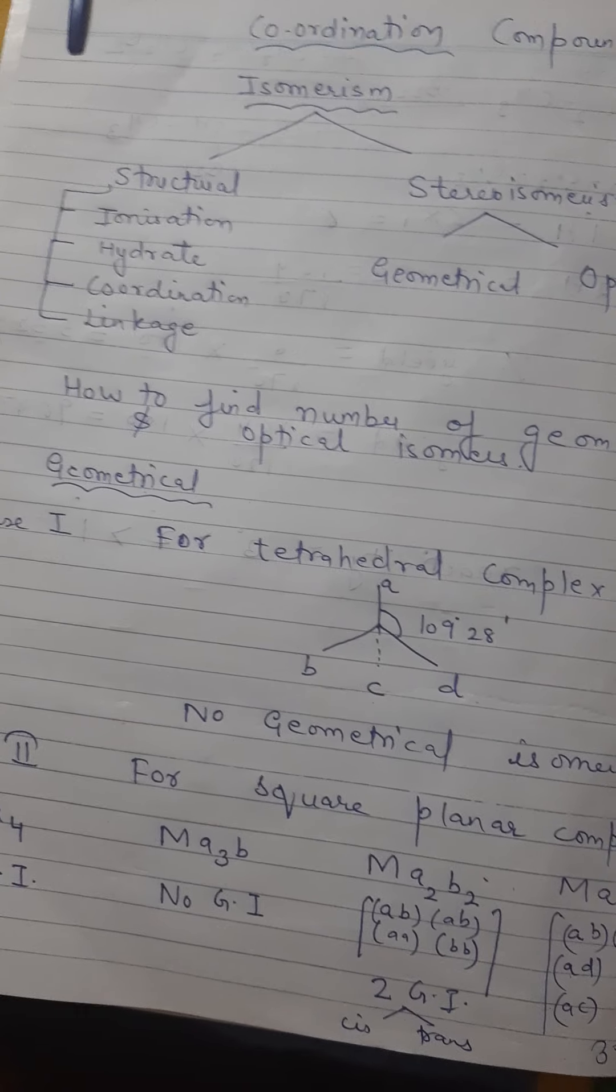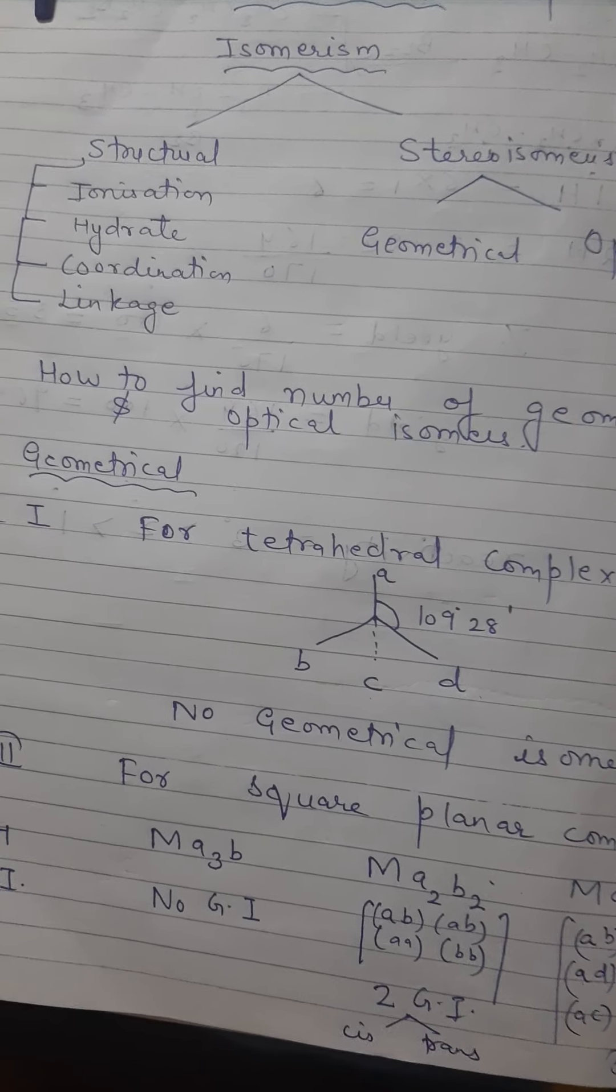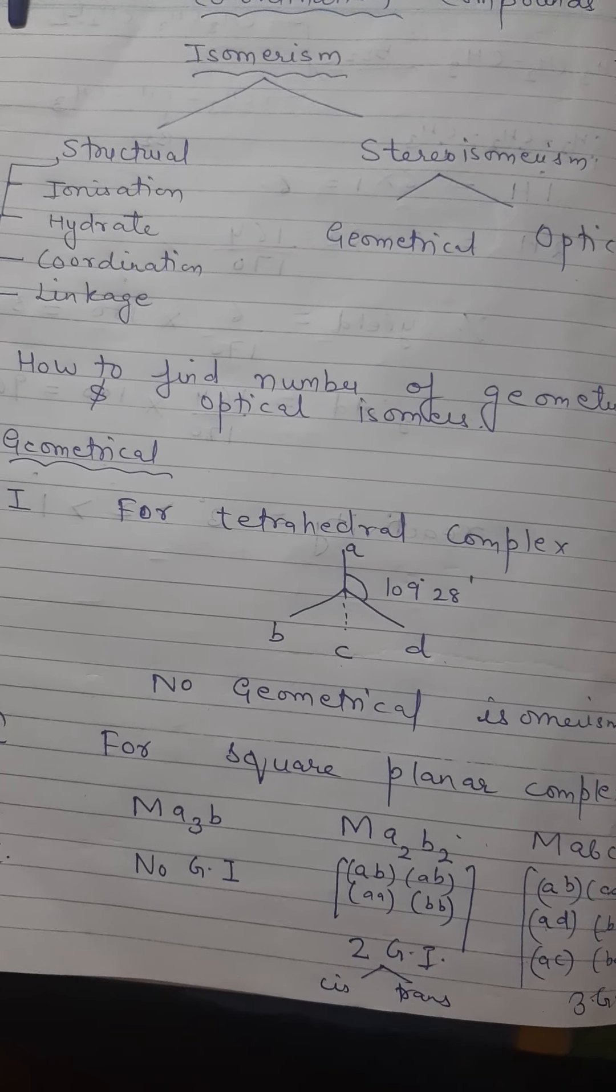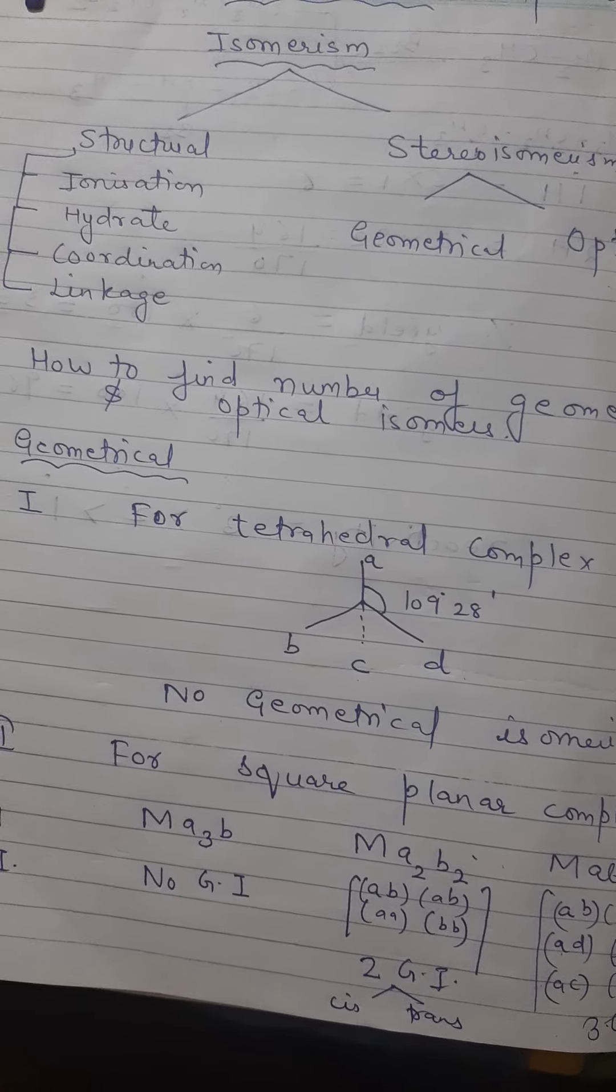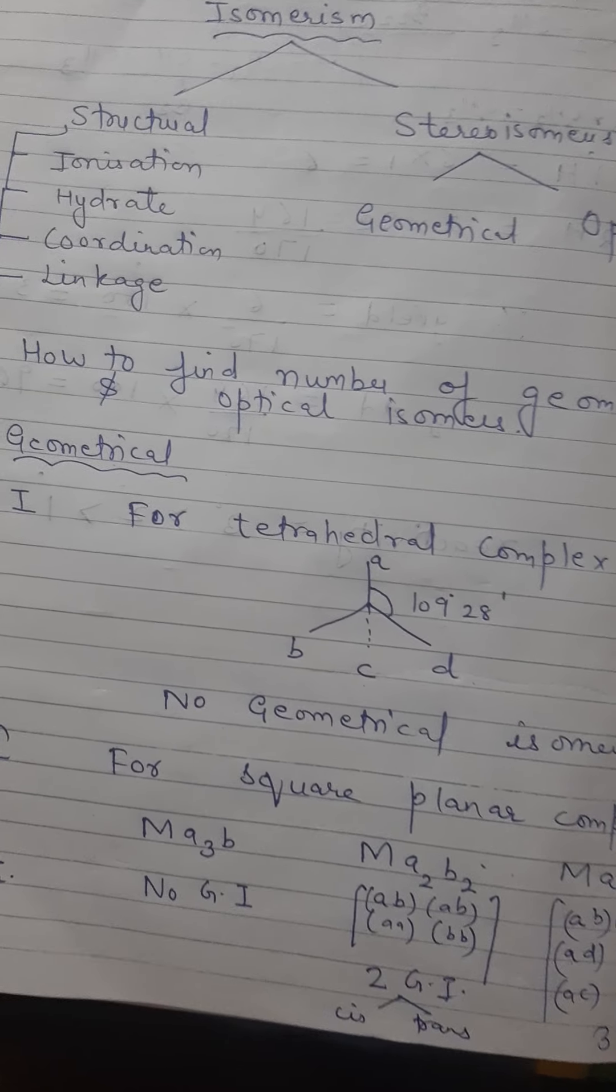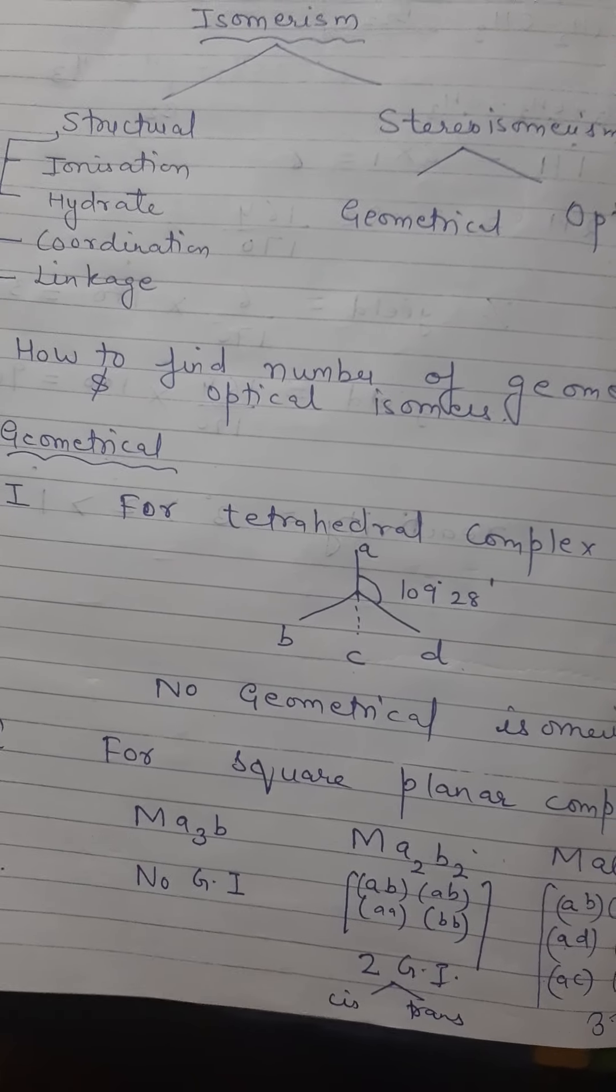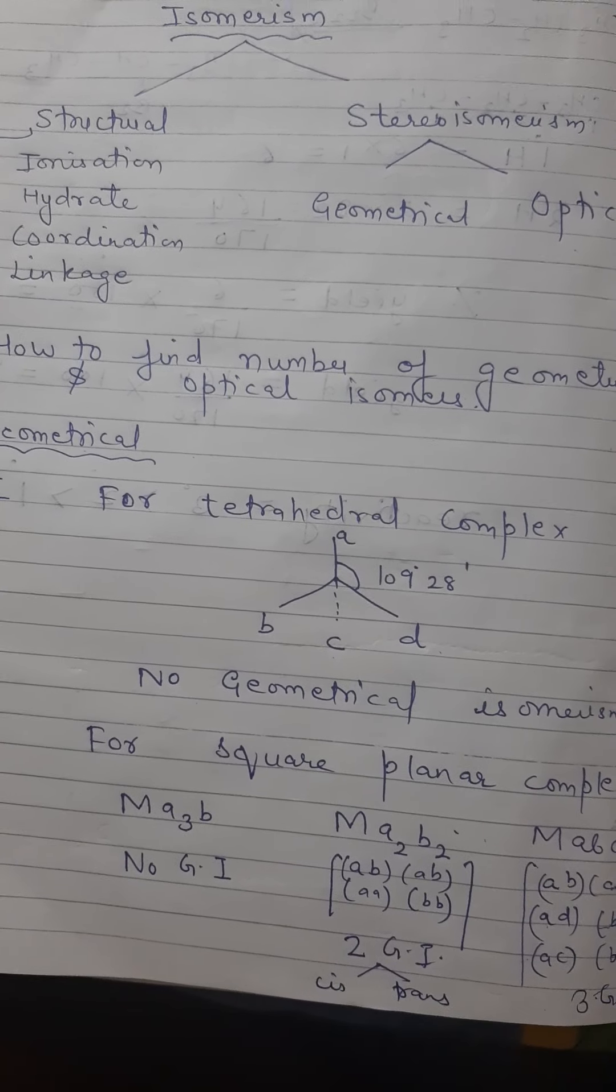In this way, we can find out the number of geometrical isomers. Let's make a combination of it and see how many combinations are there. With the help of the combination, we can know how many geometrical isomers are there. Now let's talk about optical isomers. If the exam has asked to find out geometrical and optical isomers for this particular complex.